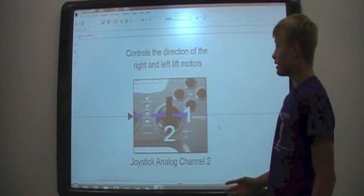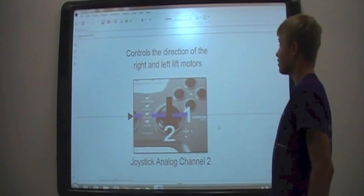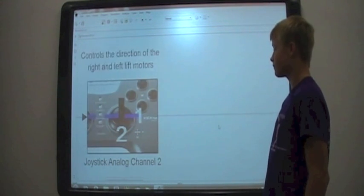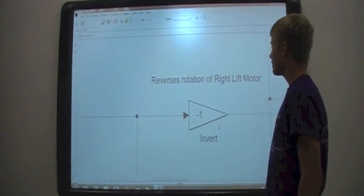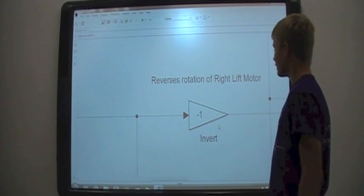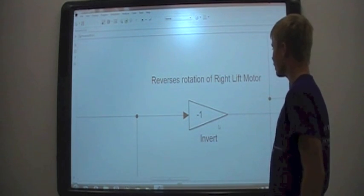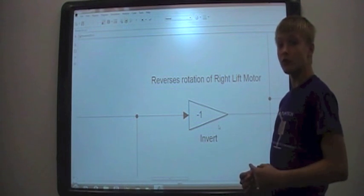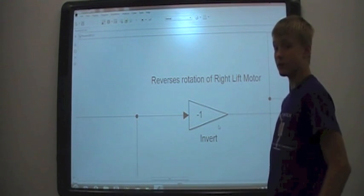This block right here controls the direction of the right and left motors. This block is the invert block. It reverses the rotation of one of the motors so whenever the motors are facing each other they will spin in the same direction.